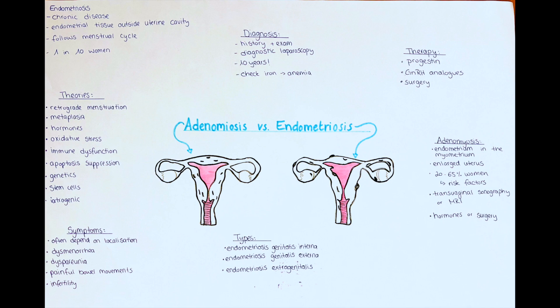A surgical therapy can also be considered, in which a hysterectomy is usually the surgical approach of choice. This is, however, usually considered after the woman's wish for further children is fulfilled. In patients with adenomyosis or endometriosis, blood iron levels should be checked regularly, as heavy menstrual bleedings or diffusely found endometrial tissue can lead to iron deficiency anemia.